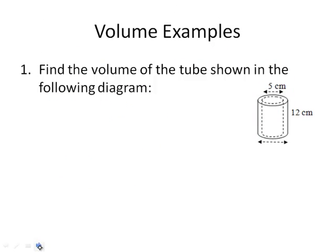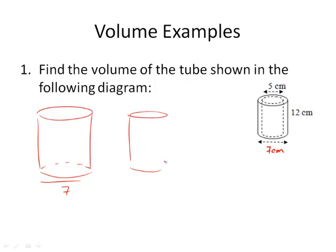Let's take a look at some examples. That should say seven centimeters right there. This example here wants us to find the volume of a tube. It's composing two different cylinders. We've got the big cylinder that has diameter seven, and then we've got the little cylinder with diameter five centimeters that is cut out of the big cylinder.